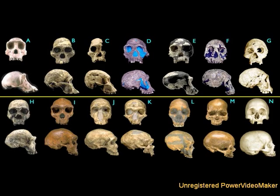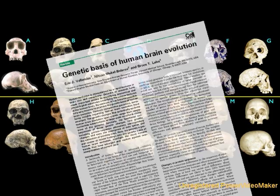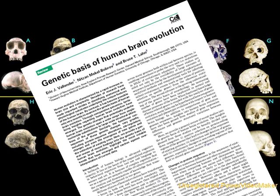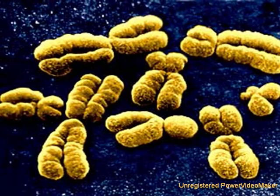That would be only one new gene since modern humans first evolved, and we already know of many novel genes that have evolved since humans and chimps diverged roughly 6 million years ago. But where did these genes come from? What is the origin of genes?